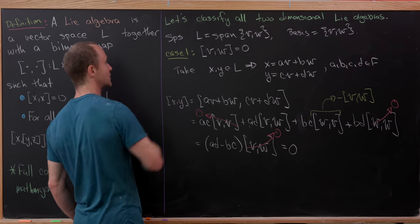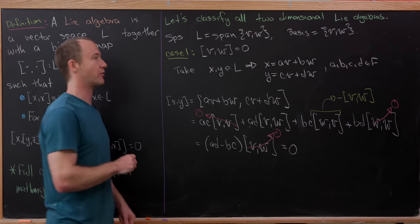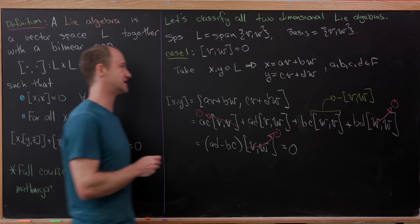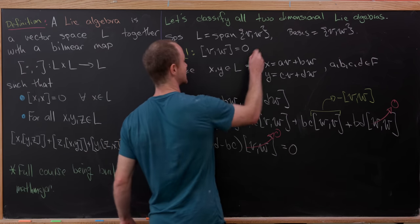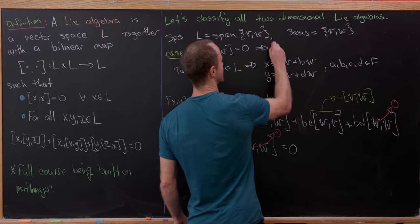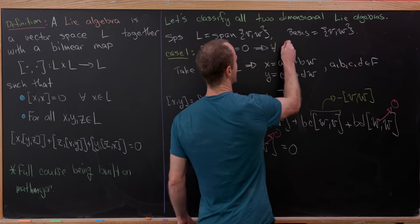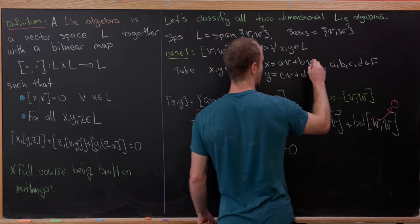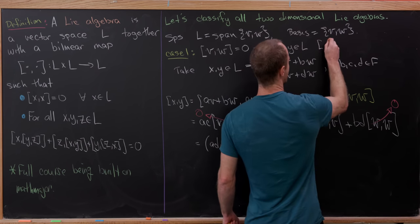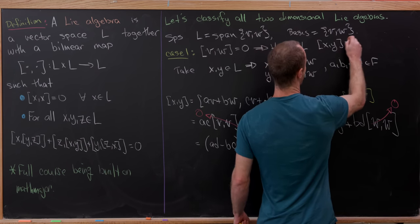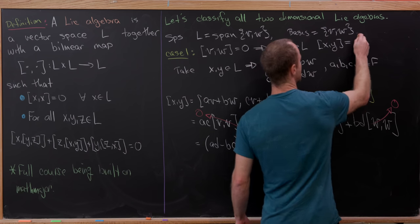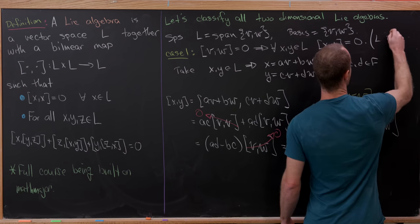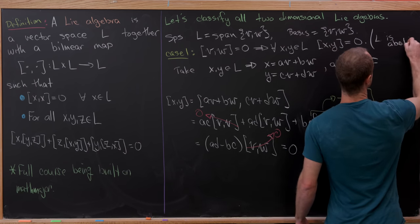So in this first case, where the bracket of the two basis vectors is zero, we have an Abelian algebra. In other words, for all x and y inside L, the bracket of x with y is equal to zero — so L is Abelian.